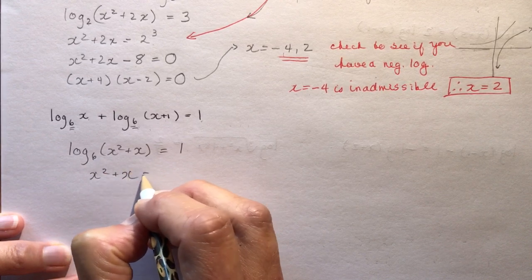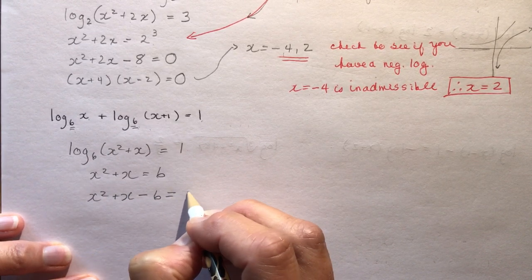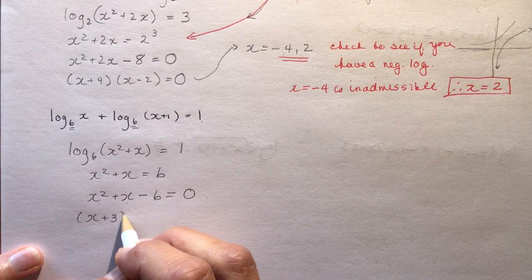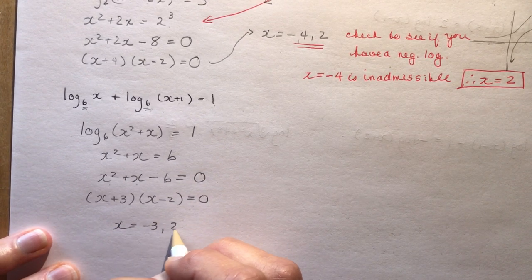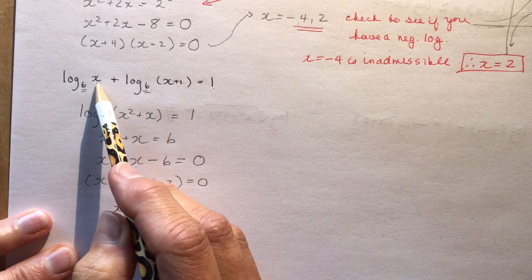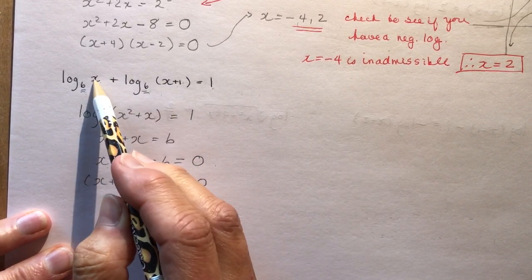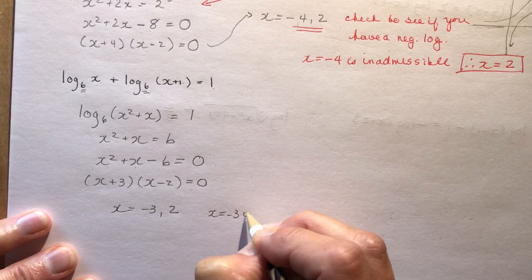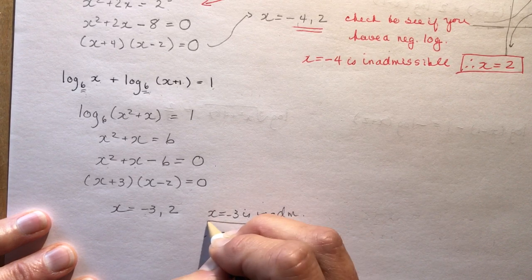So x squared plus x equals 6, giving x squared plus x minus 6 equals 0. That factors to (x + 3)(x − 2) equals 0, so x equals negative 3 or 2. You have to check — if the argument would still be positive, a negative solution might work. But this one does not: x equals negative 3 is inadmissible. Therefore x equals 2. That's your solution.